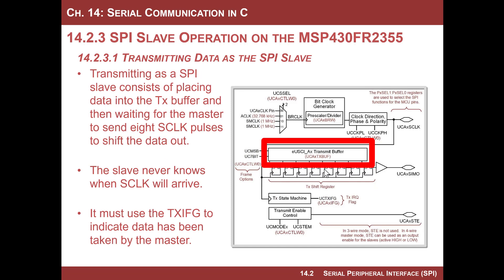Let's look at transmitting first. Once you're set up, you basically just write information to the transmit buffer. When you do that, it clears the transmit flag, and then you sit there and wait for the SPI clock to arrive — and you never know when it's going to happen. Whenever you have a peripheral sitting out there waiting for something, you always use interrupts. So you set it up, put the information in the transmit buffer, and go back to normal life in the main CPU program. When the information is shifted in, the flag is asserted, it triggers an interrupt, and you handle it with the interrupt service routine to grab the information.